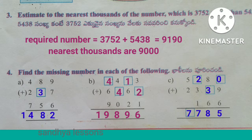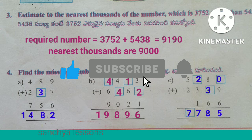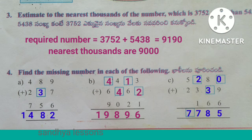Problem 4: Find the missing number in each of the following. Let us write the missing numbers for the given additions.